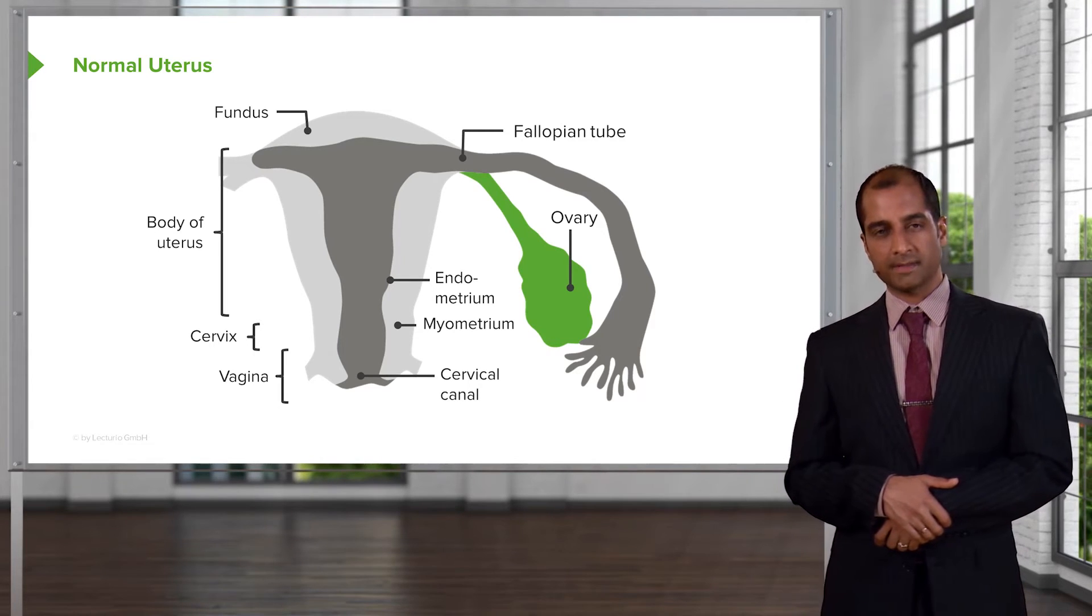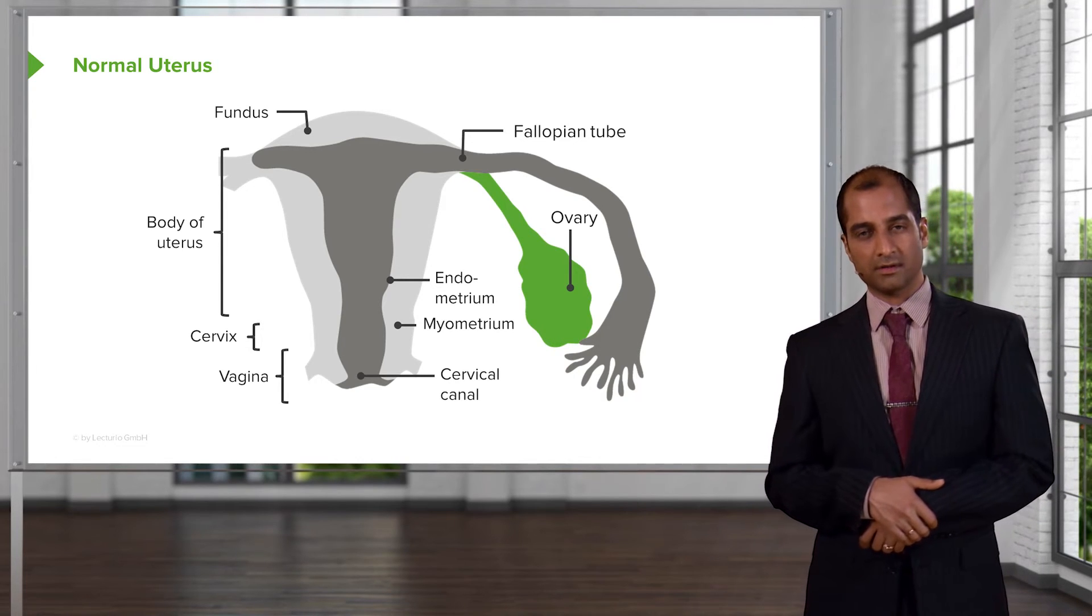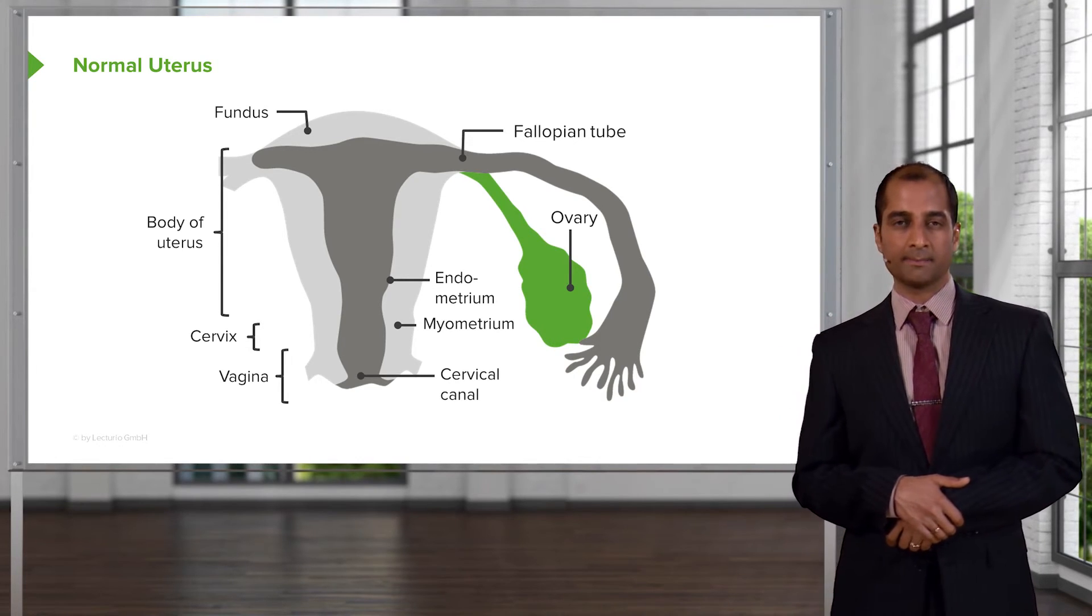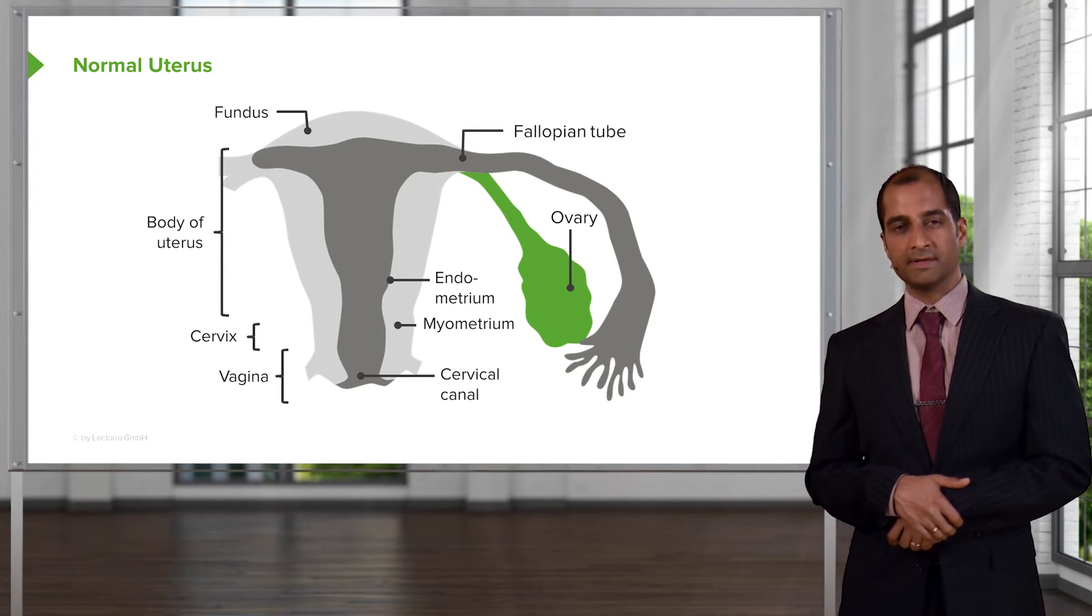With the uterus, keep in mind that the inner aspect or inner lining is called the endometrium. That will become important because we'll talk about endometritis and endometriosis.